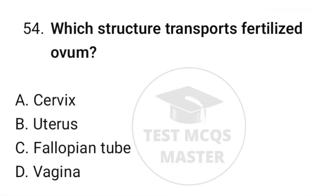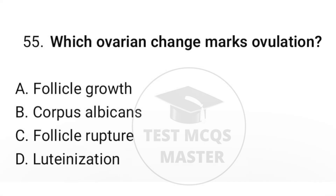Question number fifty-four: which structure transports the fertilized ovum? The correct option is C, fallopian tube. Question number fifty-five: which structural change marks ovulation? The correct option is C, follicle rupture.